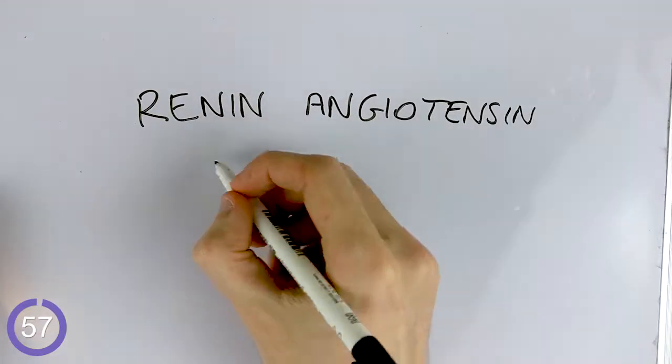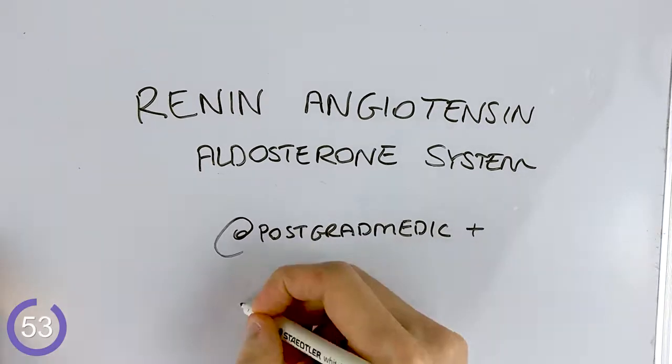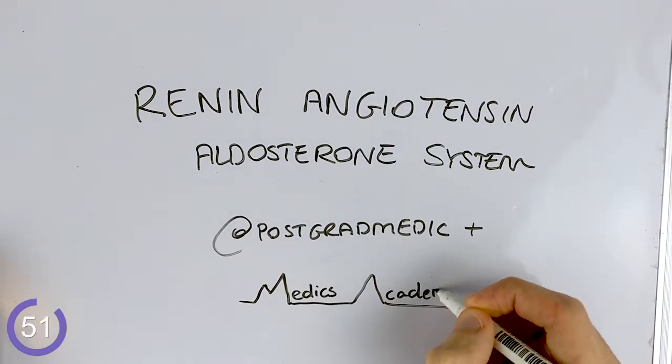Hi everyone, today I'm going to talk you through the renin-angiotensin-aldosterone system in 60 seconds, the function of which is to maintain your blood pressure and fluid balance.